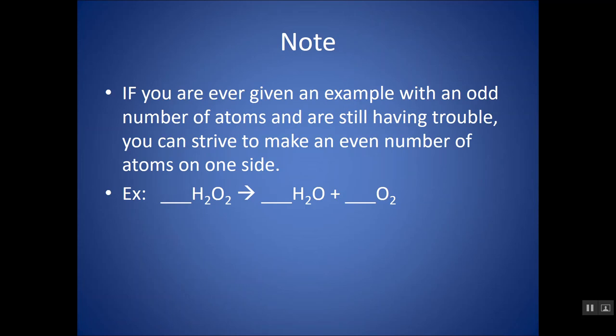If you're ever given an example with an odd number of atoms and you're still having trouble, you can strive to make an even number of atoms on one side. For example, you might find that you struggle here a bit. There's two oxygens here on the left, and there's one and two. There's three oxygens on the right, and they're in different places.